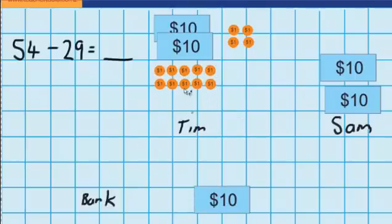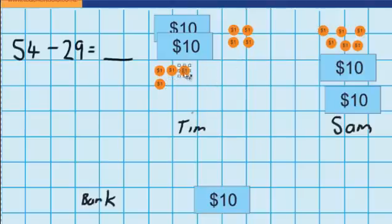And now it's going to be really easy for me to give Sam the $9 that he needs. I can give him one, two, three, four, five, six, seven, eight, and nine. Now you can see that means he's left with two $10 coins or $20 and one, two, three, four, five $1 coins.